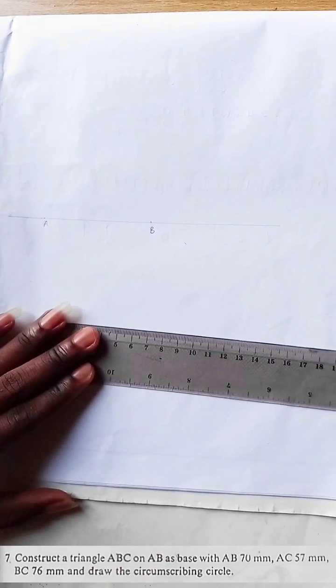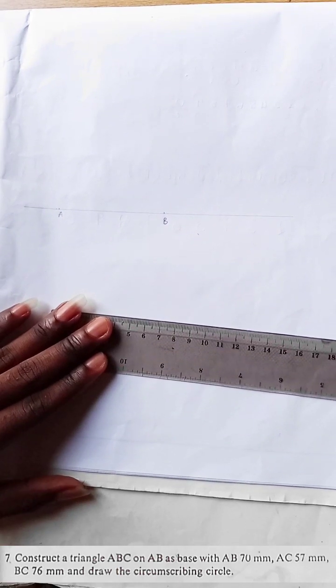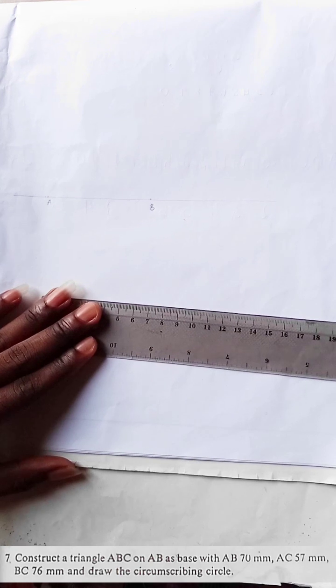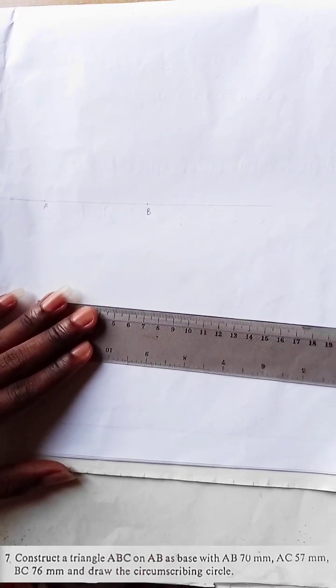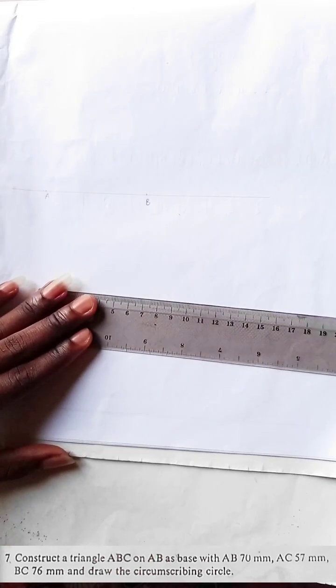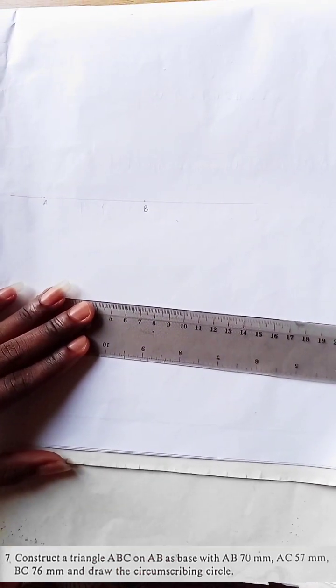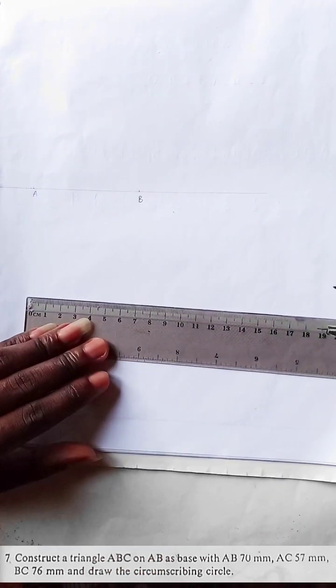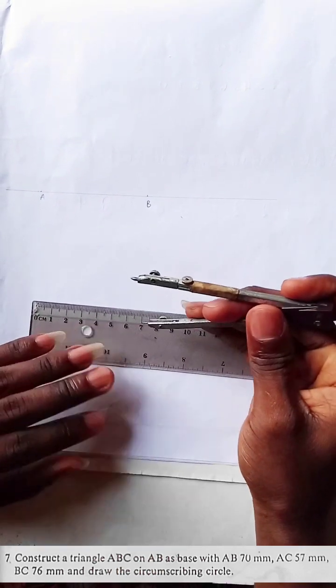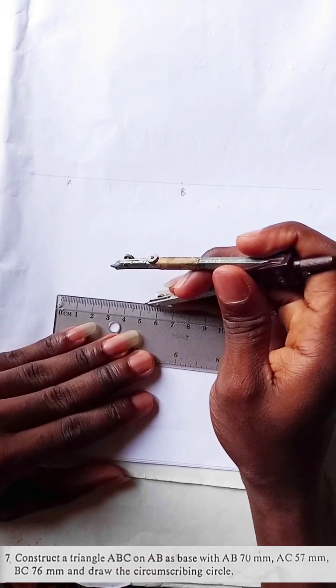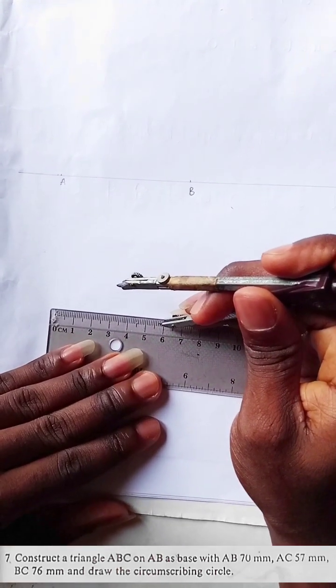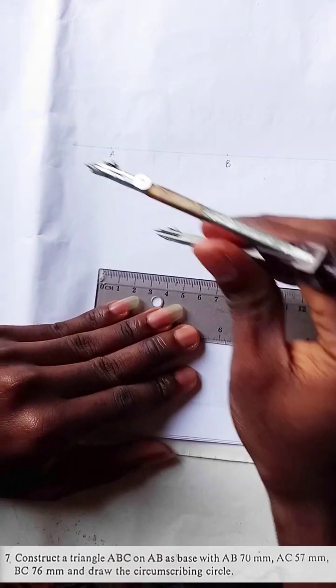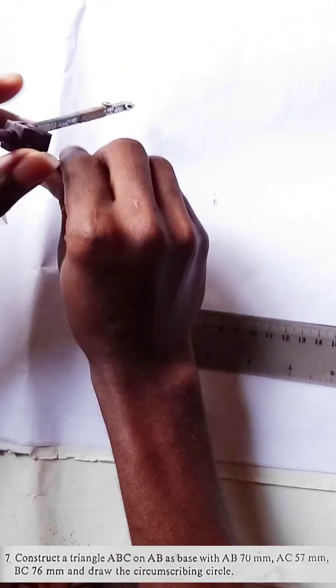So the question now says that AC 57mm and BC 76mm and draw the circumscribing circle. So this is how you do it. Since we are constructing a triangle, use your compass, measure out 57, that is 5.7. This is 5.7. With your compass, place that at A and make an arc.